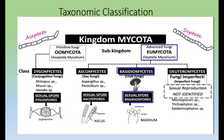Fungi come under the kingdom Mycota. In the five kingdom system there are five kingdoms: kingdom Prokaryota, kingdom Protista, kingdom Fungi or kingdom Mycota, kingdom Animalia, and kingdom Plantae. Kingdom Mycota deals with the fungi.